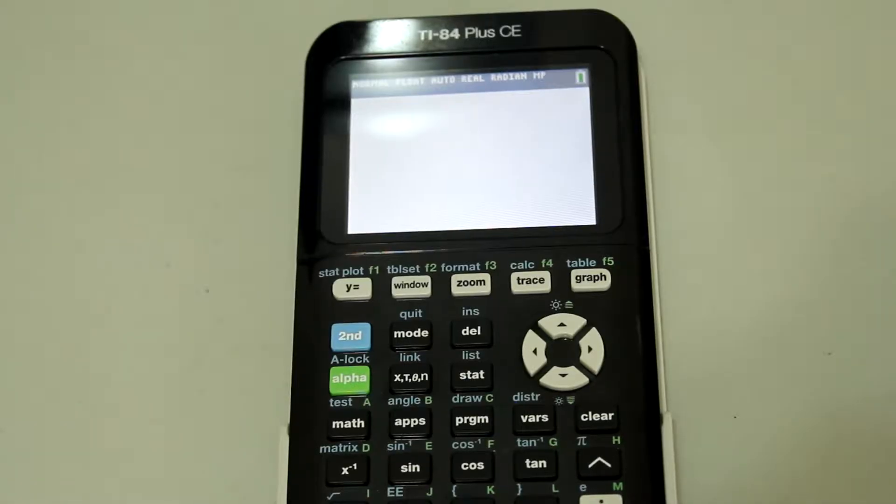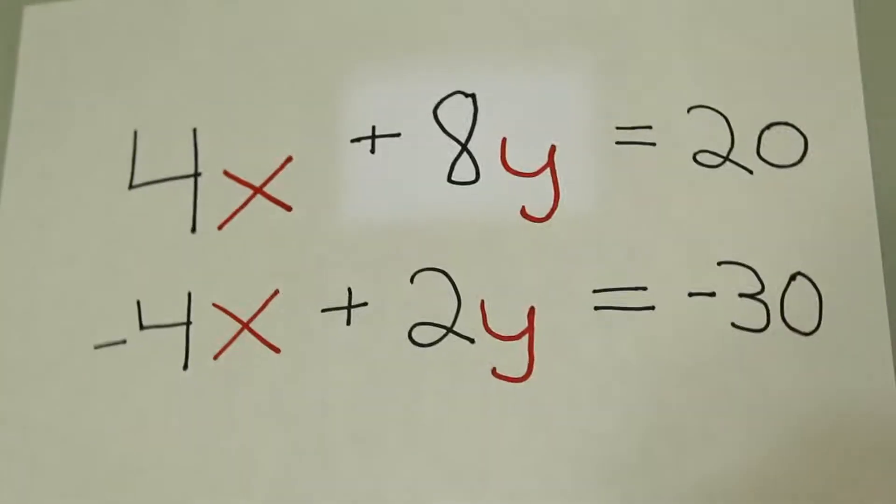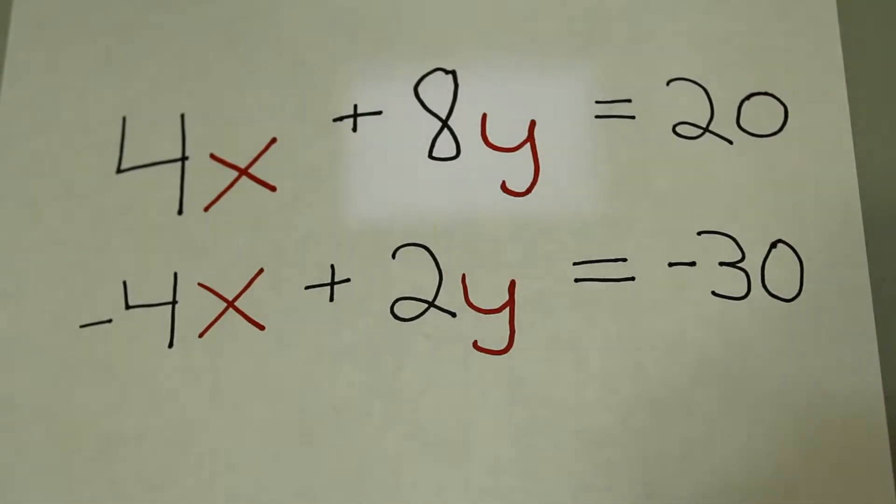So we're going to solve this system of equations. You might want to write that down if you want to follow along. That would be 4x plus 8y equals 20 and the second one is negative 4x plus 2y equals negative 30.